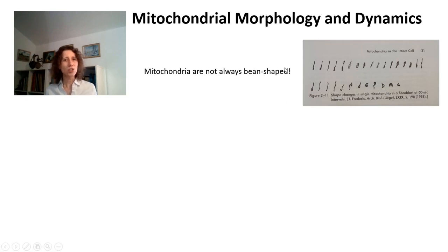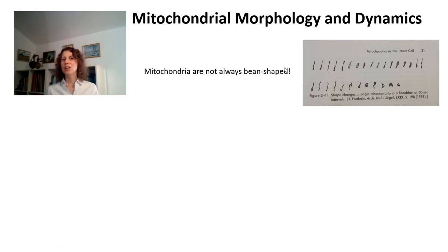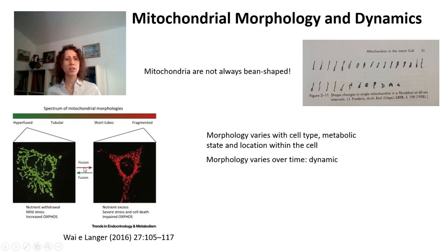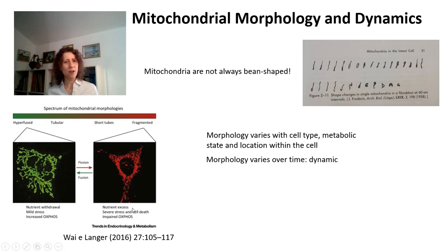If you look at the name mitochondria, it means granule and thread, which already describes an organelle that can have different sizes and shapes. Mitochondria are highly dynamic and can vary from very hyperfused - they look kind of like spaghetti mitochondria - to very tiny and fragmented granules, and everything in between these two very different morphologies.